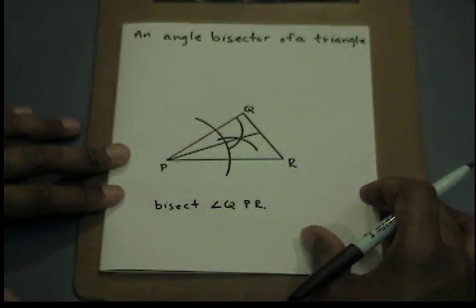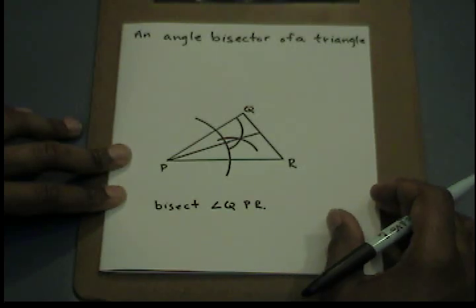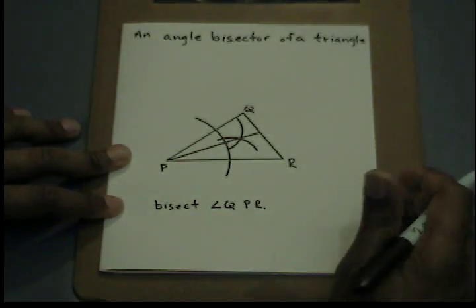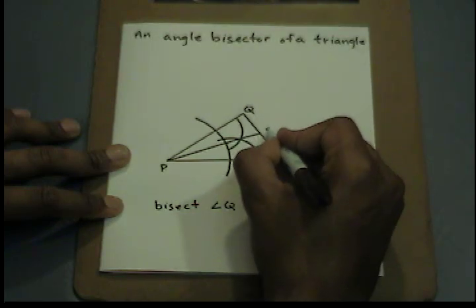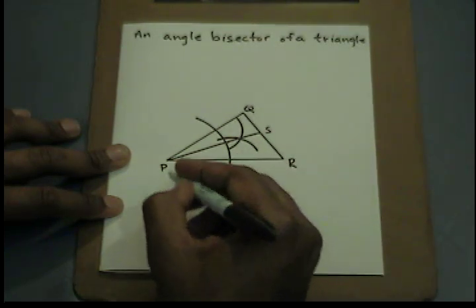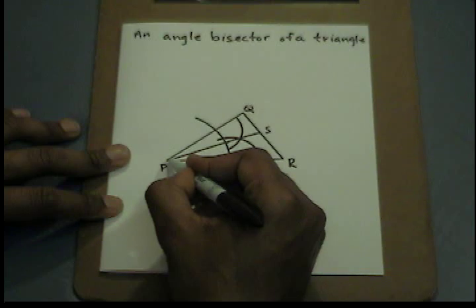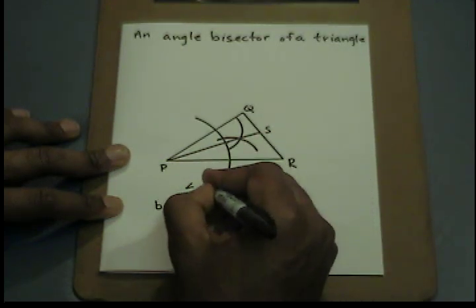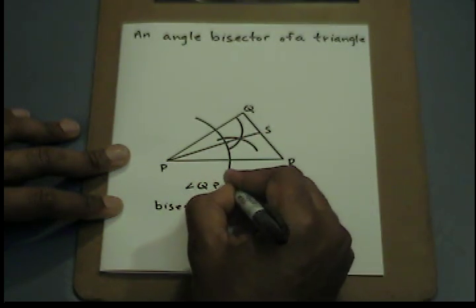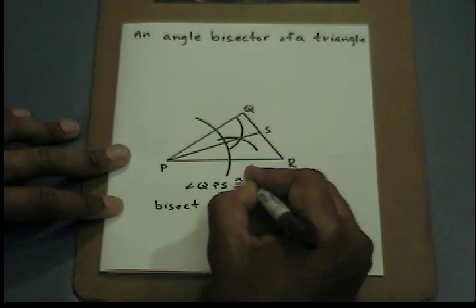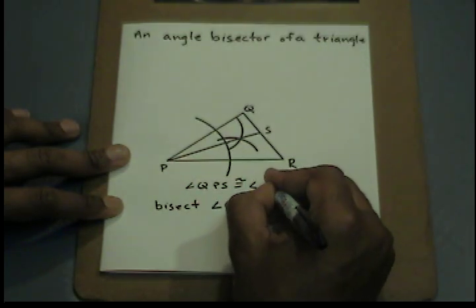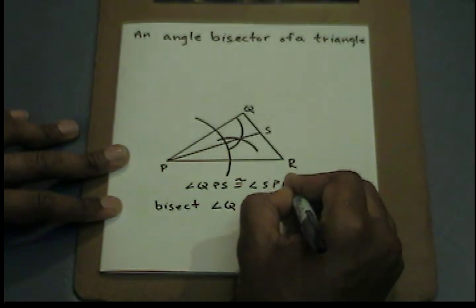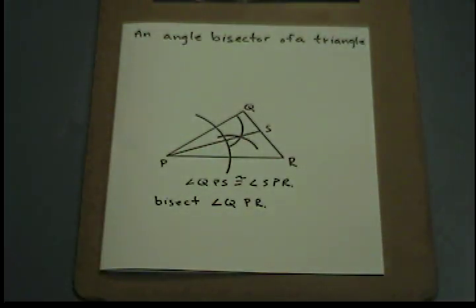Now we have constructed an angle bisector for triangle PQR. Let's label this S. We know that angle QPS is congruent to angle SPR. And that is how we construct an angle bisector of a triangle.